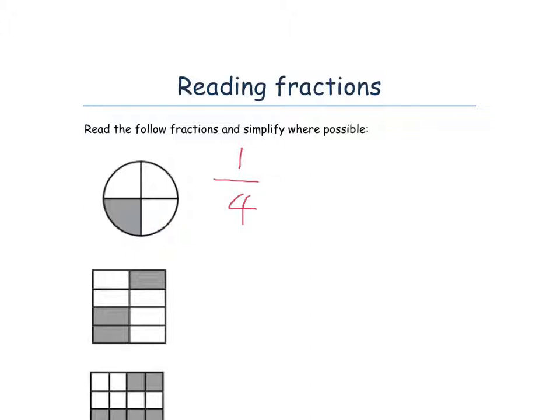...is one out of four, which we write in this form. Now this line here means divide - it means one divided into four bits, because we've got a whole one here and as we can see, it's been divided into four sections, but we want one of those four sections. So this represents a fraction of one quarter or one over four.